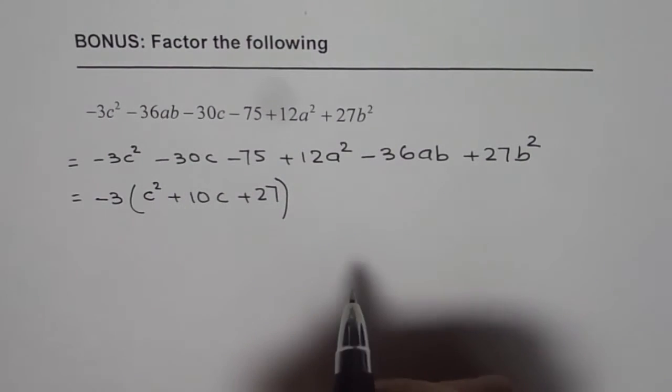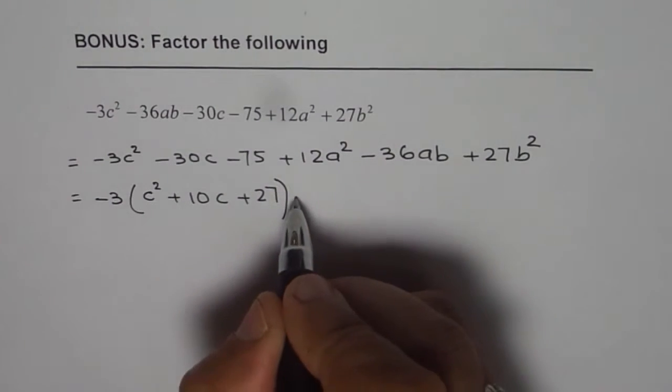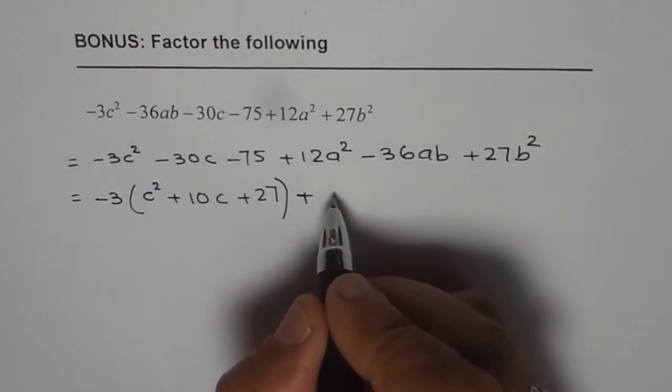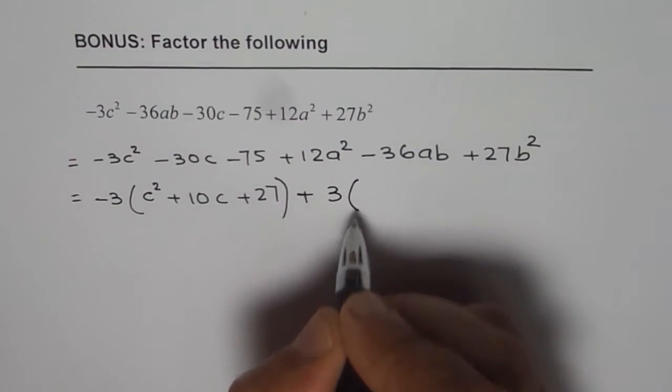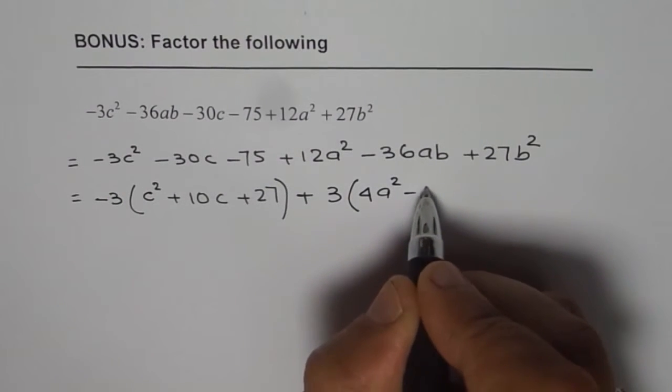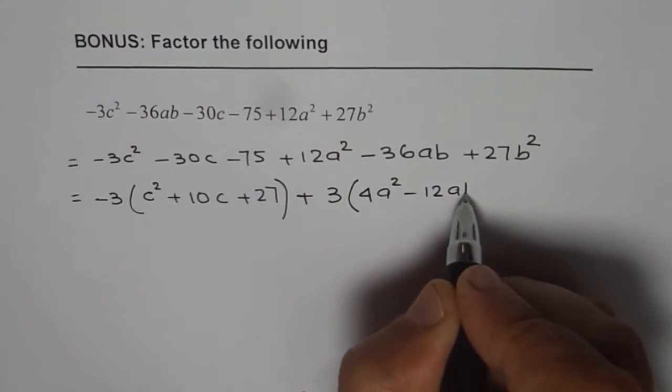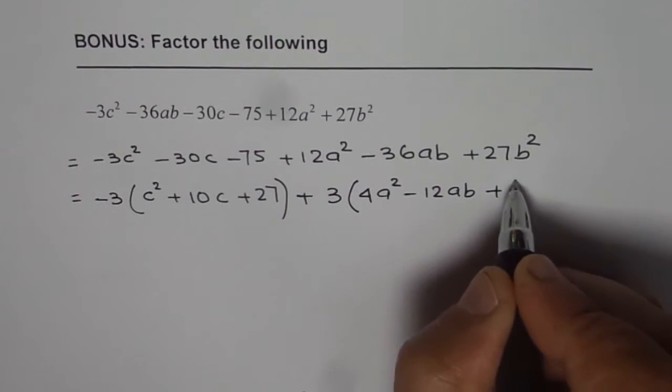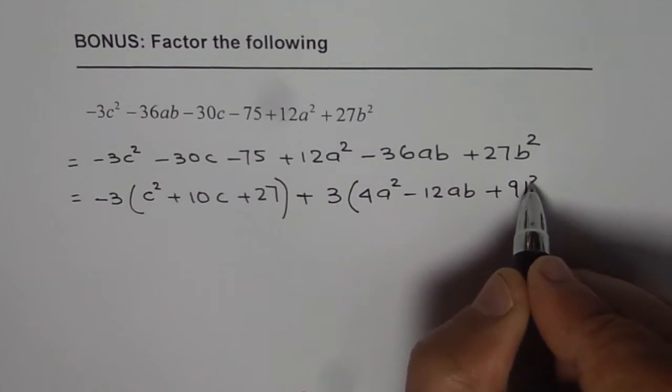In the second group what can we take common? Well we can take 3 common. So we get 4a square minus 12ab plus 9b square.